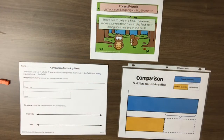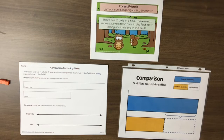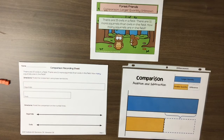Now let's look at a comparison larger quantity unknown scenario. There are 15 owls in a field. There are 11 more squirrels than owls in the field. How many squirrels are in the field? Students should discuss what is known and what is unknown. In this problem, we know the smaller quantity — the 15 owls — because we also have the difference: there are 11 more squirrels than owls, so owls must be the smaller quantity. What is unknown is the larger quantity — we're trying to figure out how many squirrels are in the field.